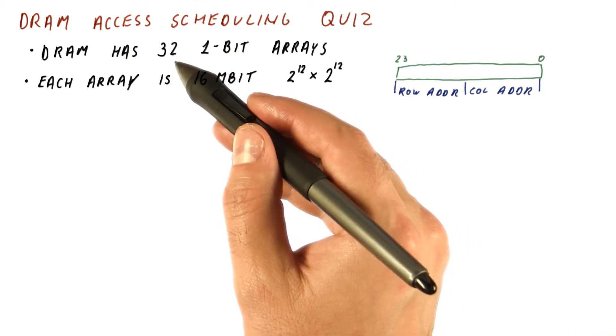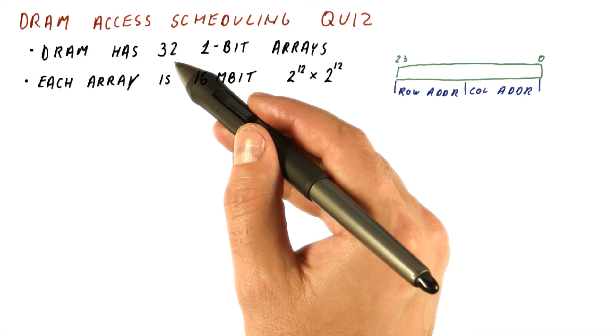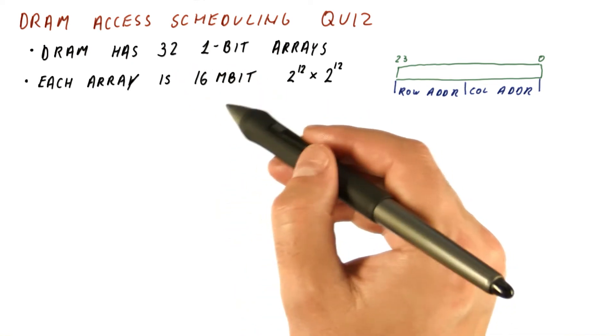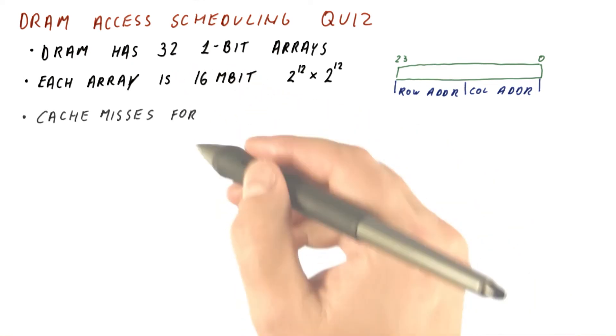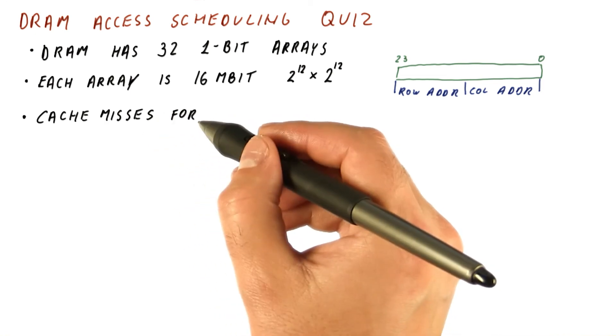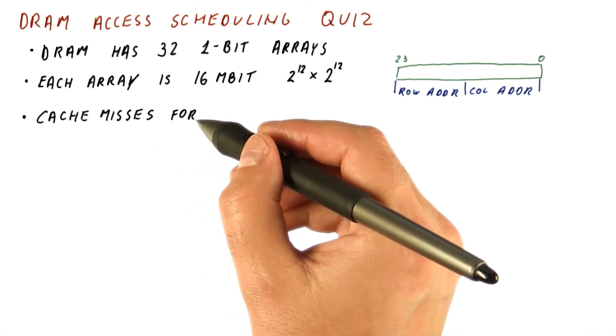So one chip, for example, might hold bit number seven from all the words in the 16-megaword memory. Let's say we have cache misses currently pending for the following addresses.